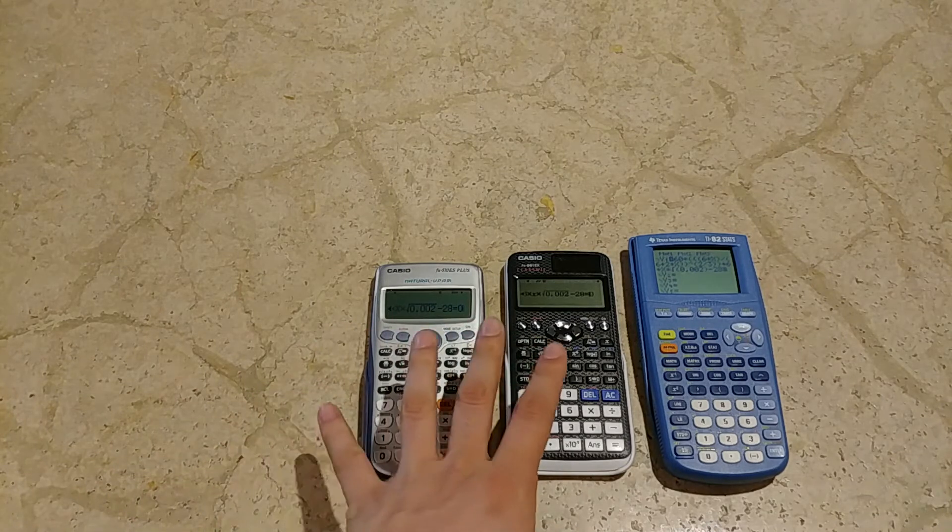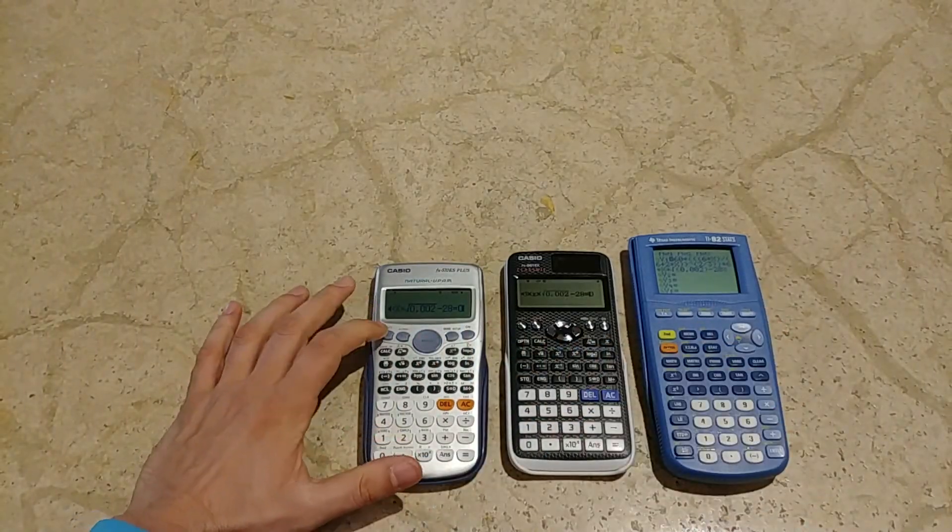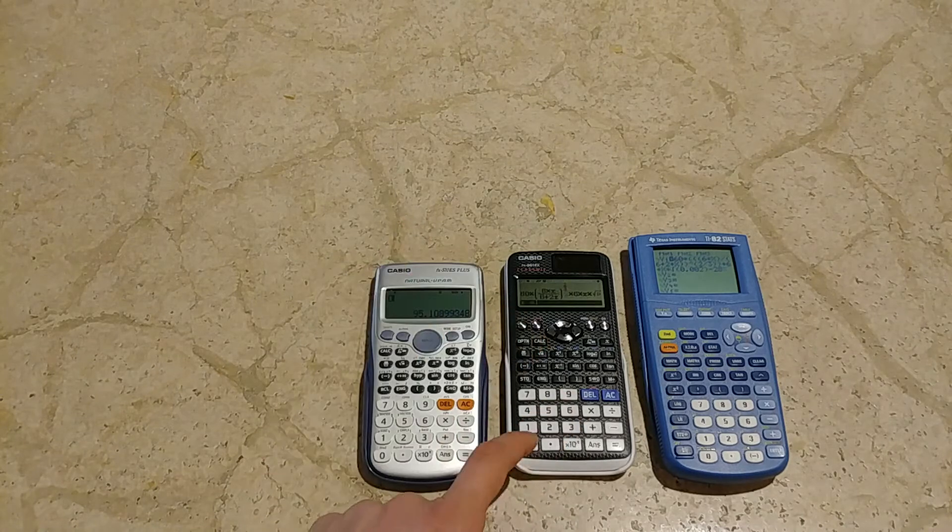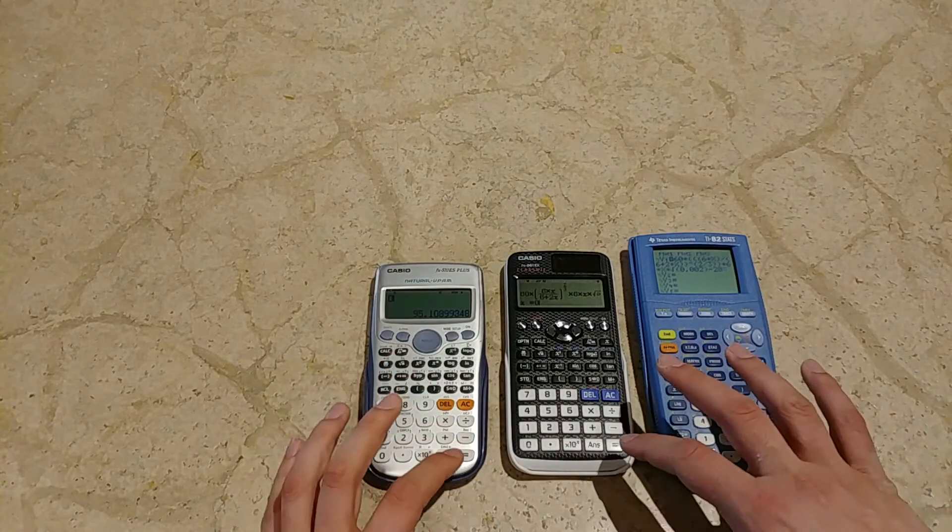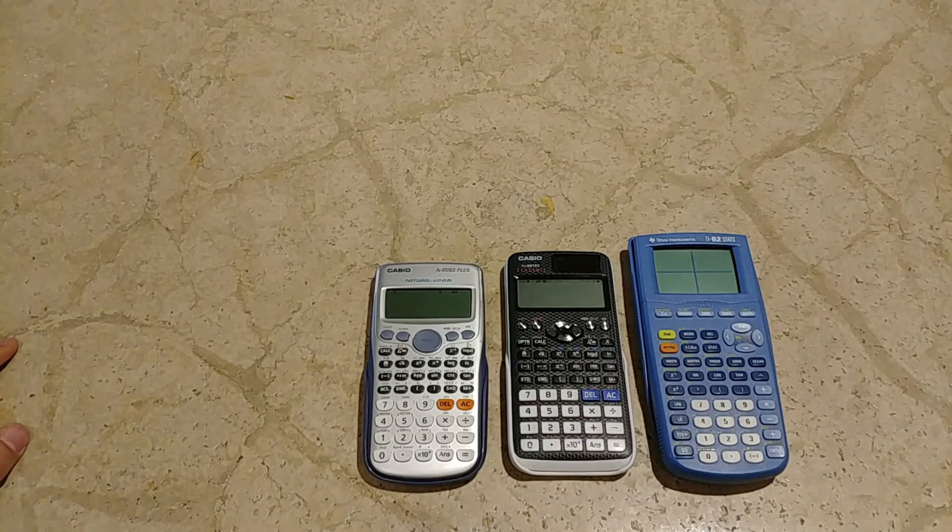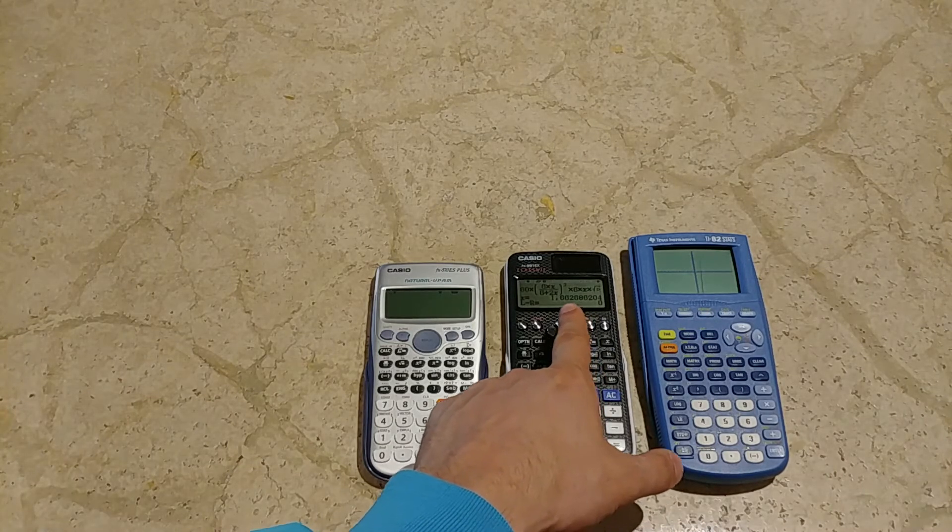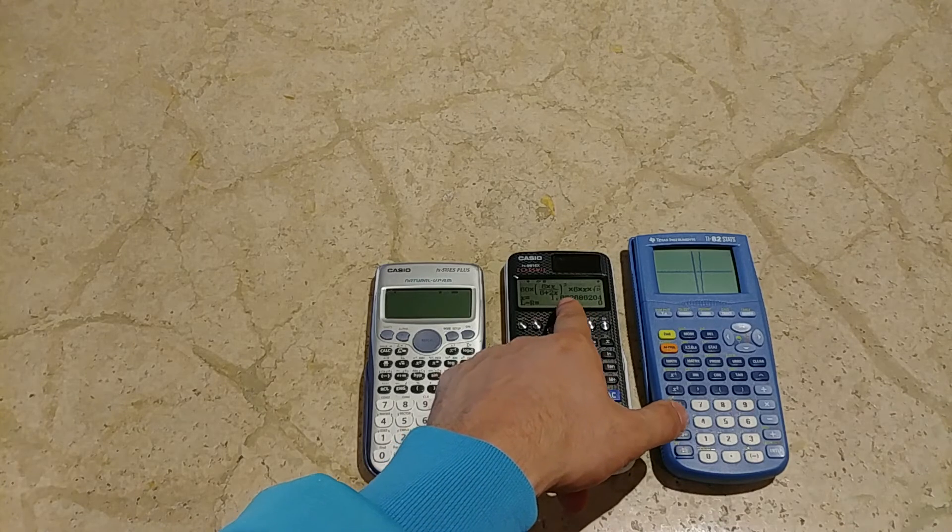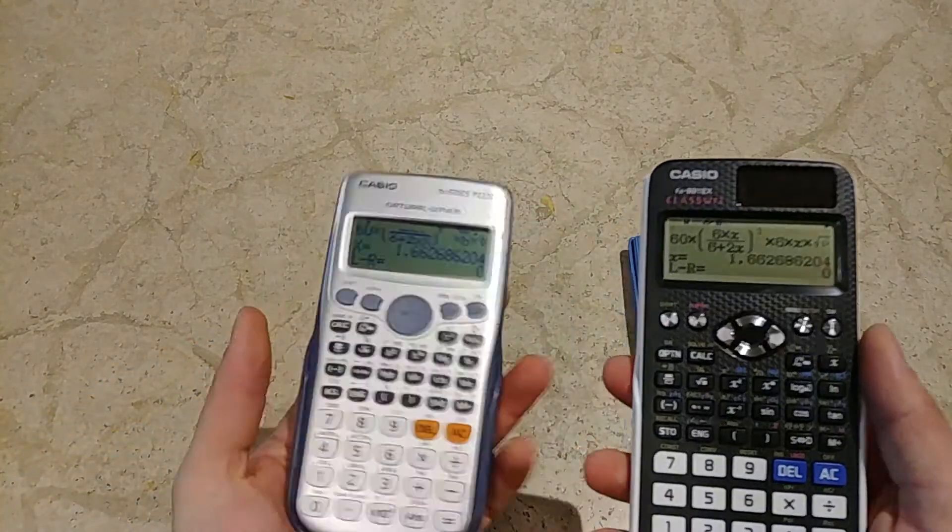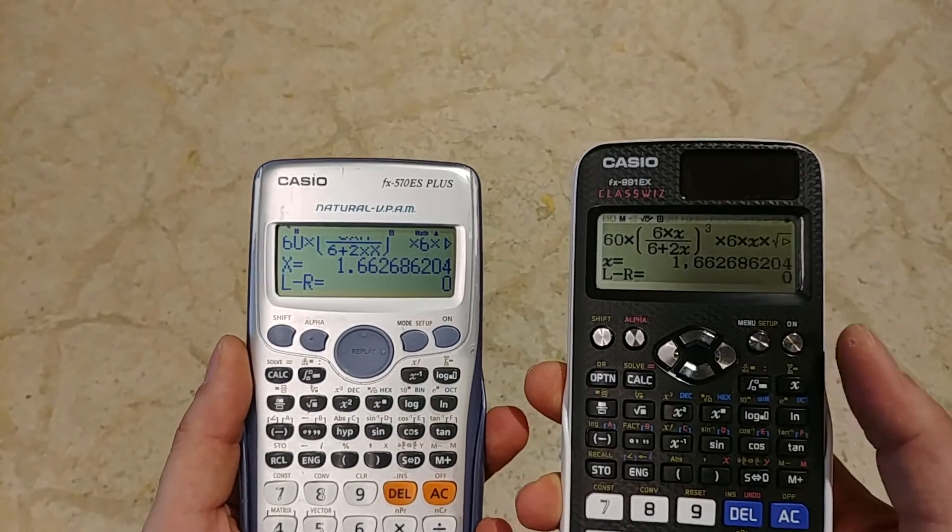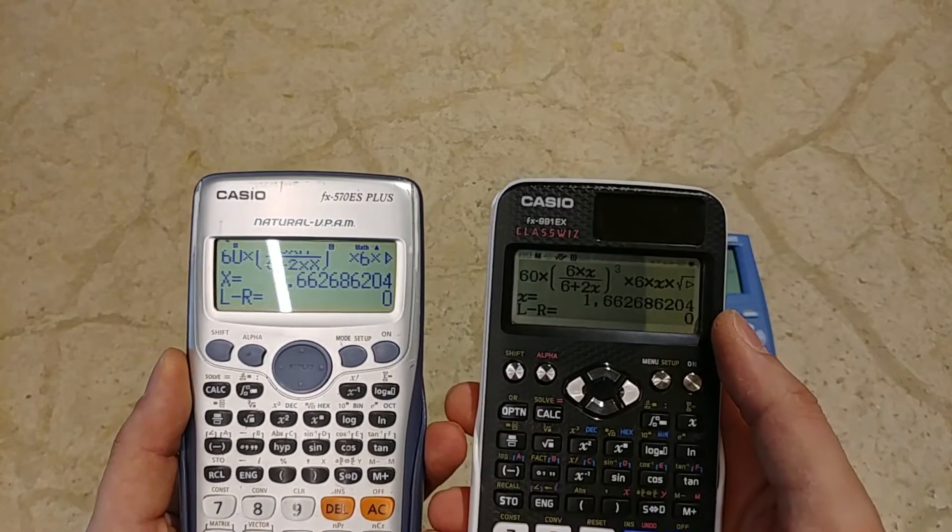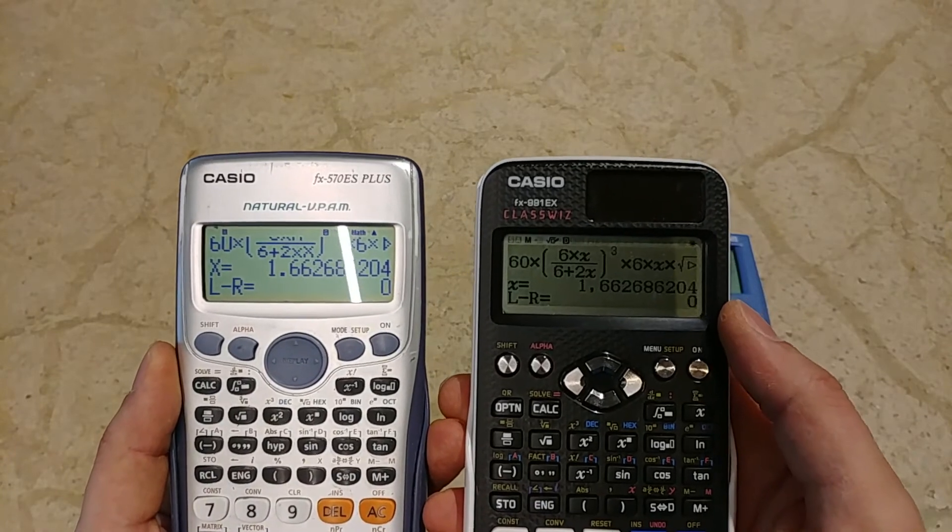So I have to press shift solve on these two and graph on the other one. Shift solve, start from X equals 0, and again shift solve, start from X equals 0. 3, 2, 1, and go. This is the first one with the results, so left minus right, and this is 1.662, the result of this equation, so it's the height of the channel. The same one for this, I'll show you the results are the same, but this is faster. The result is the same. Even the display here is more defined.